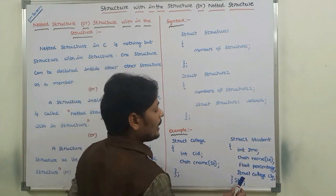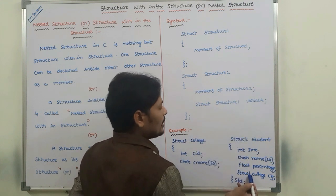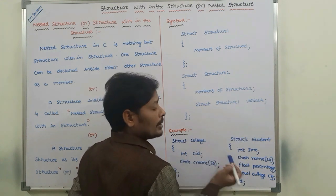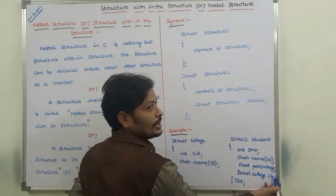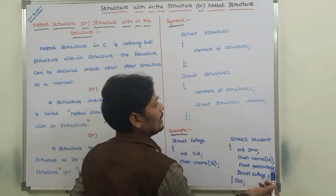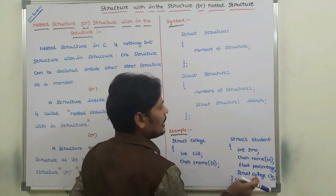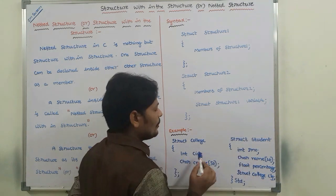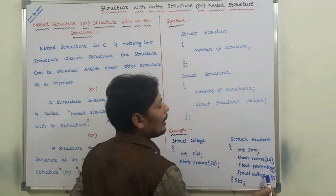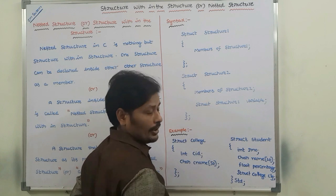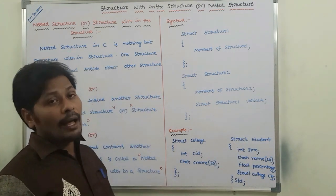How it can be created? In this way: struct college CLG. So struct structure one is college, and the variable name is CLG. This entire structure can be declared as a data member in another structure, and then this can be called structure within the structure.